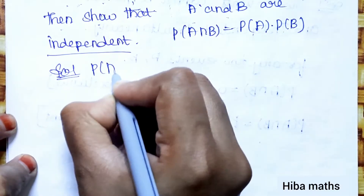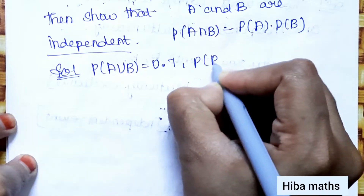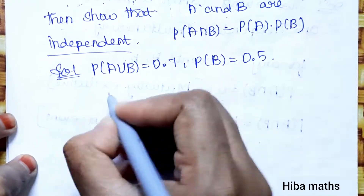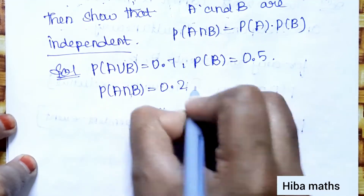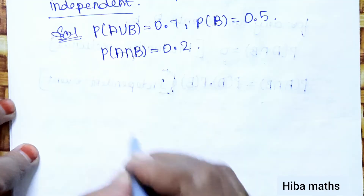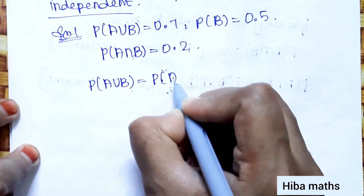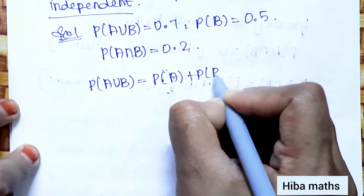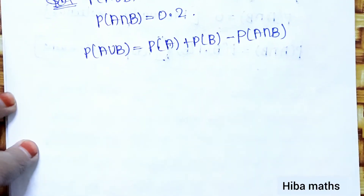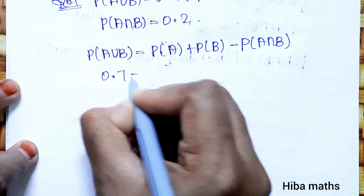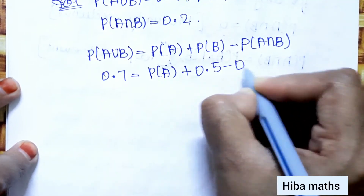In the solution: P(A∪B) = 0.7, P(B) = 0.5, P(A∩B) = 0.2. We use the formula: P(A∪B) = P(A) + P(B) − P(A∩B). Substituting: 0.7 = P(A) + 0.5 − 0.2.